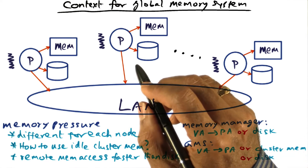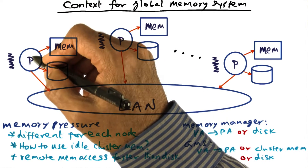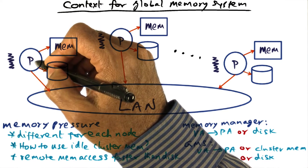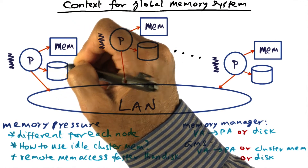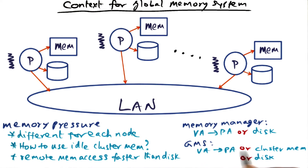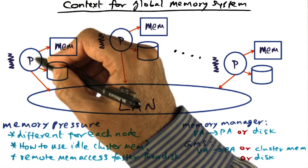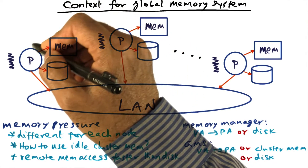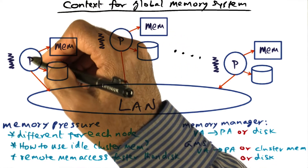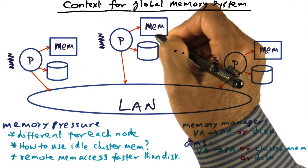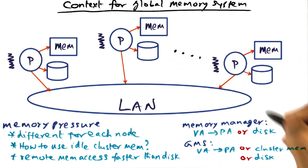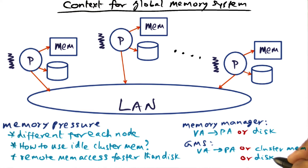Normally when we think about the memory hierarchy in a computer system, we say there is a processor, there are caches, there is main memory, and then there is virtual memory sitting on the disk. But in GMS, we extend that by saying, in addition to the normal memory hierarchy — processor, caches, and memory — there is also the cluster memory. Only if the page is not in the cluster memory do we need to go to the disk to get it.